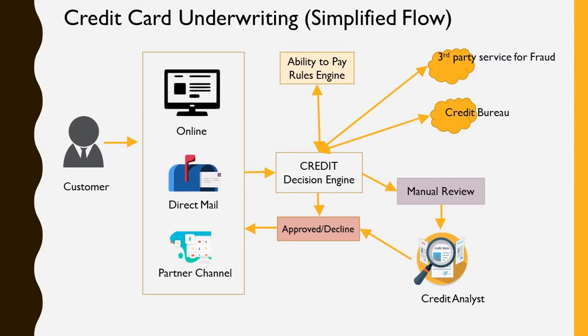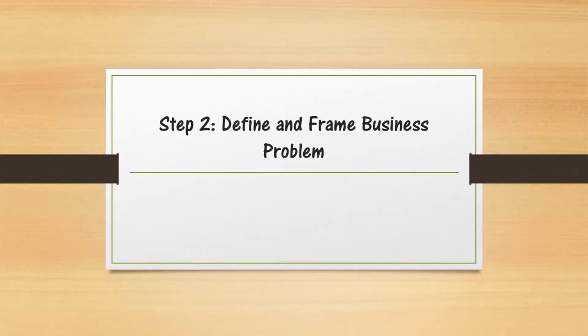There are cases where the decision engine is not confident, and in those cases it sends the application to a manual review process. In manual review, the credit analyst team performs an offline credit check, possibly requests more information from the customer, and then decides whether to approve or decline. When automatically approved, the process is real-time; when it goes to manual review, it introduces a lag of a day or two before the customer receives a decision.